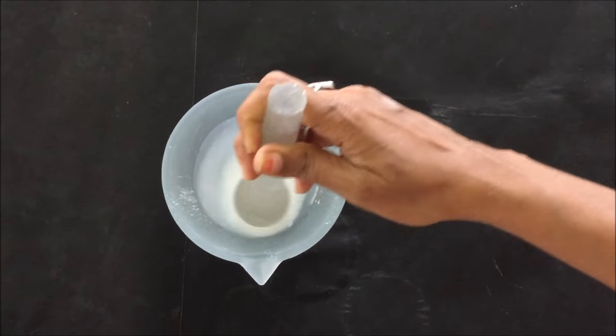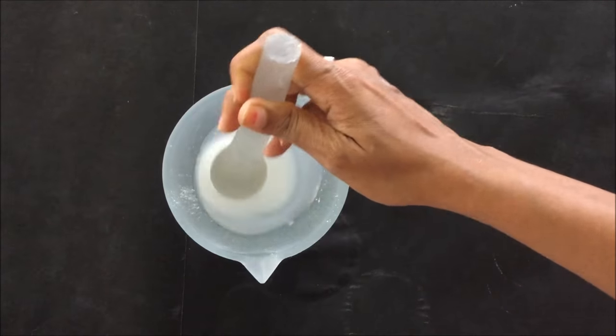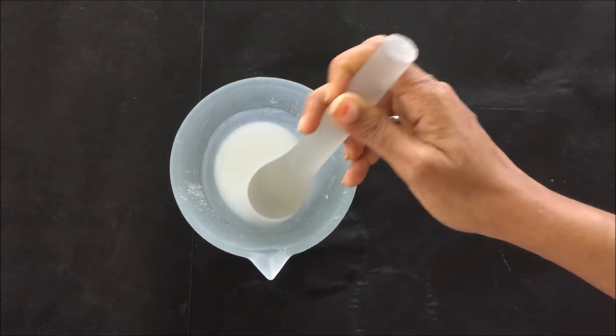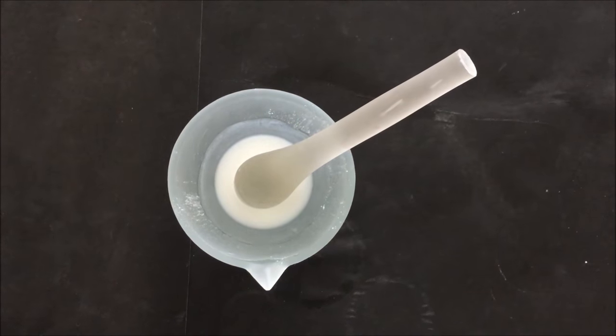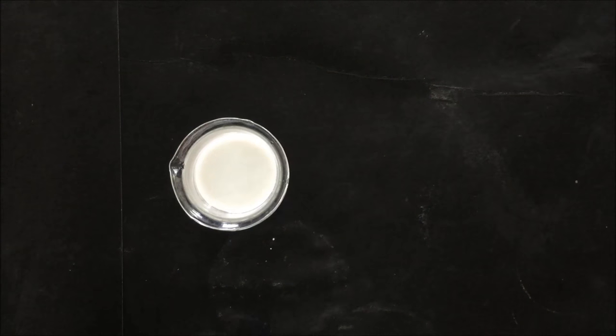Mix it properly to make sure that there are no lumps. Then after mixing, transfer the slurry into a clean dry beaker and by using a glass rod, make the slurry homogenous.